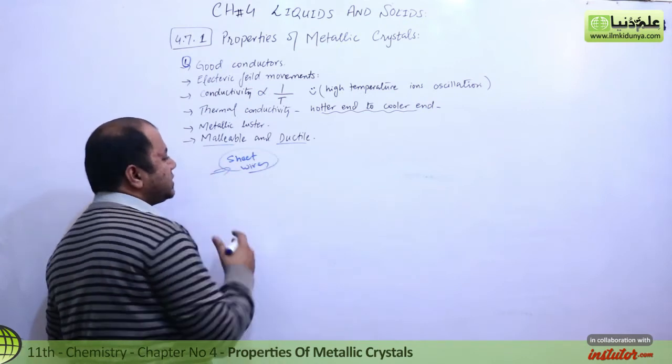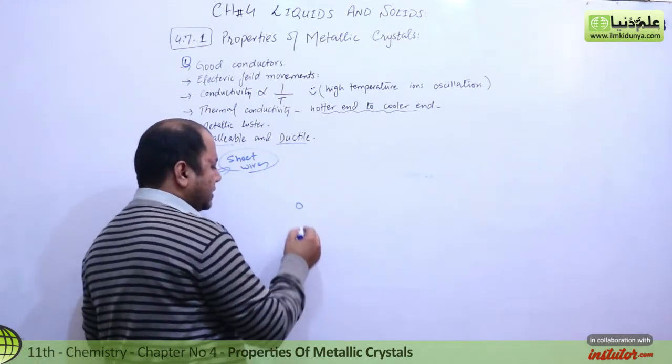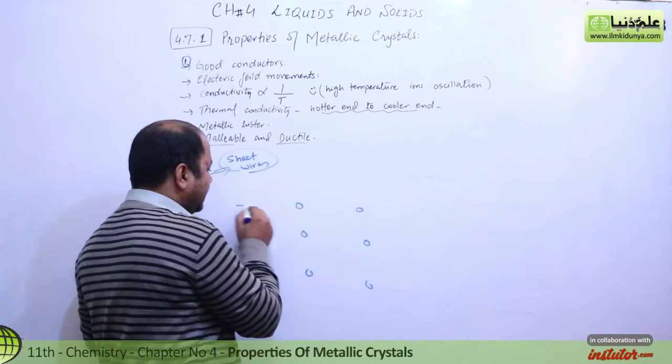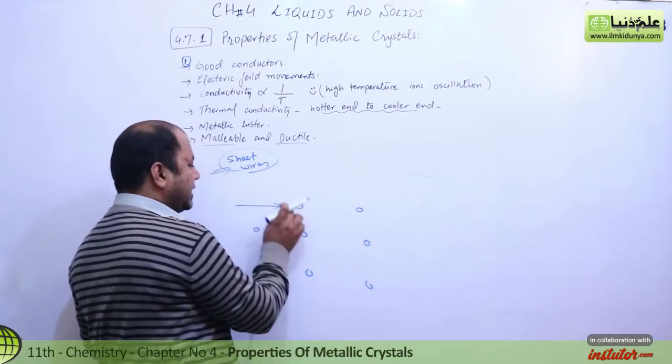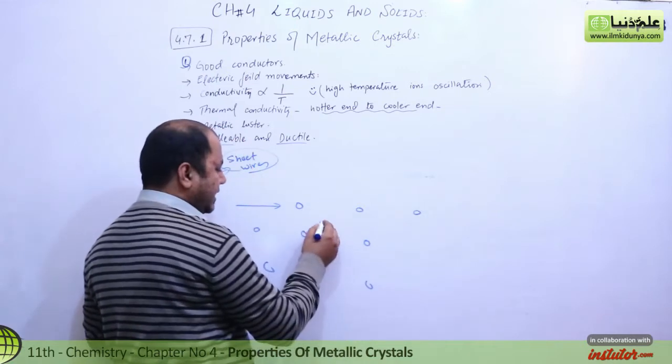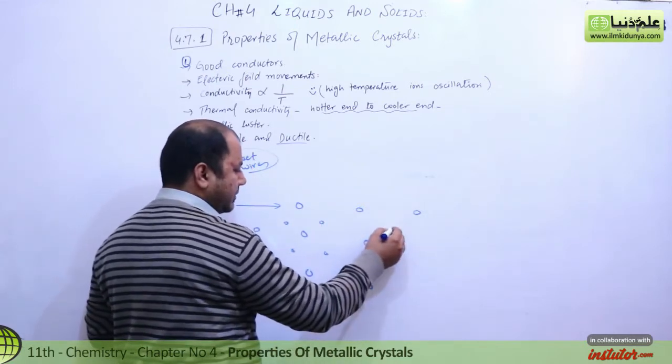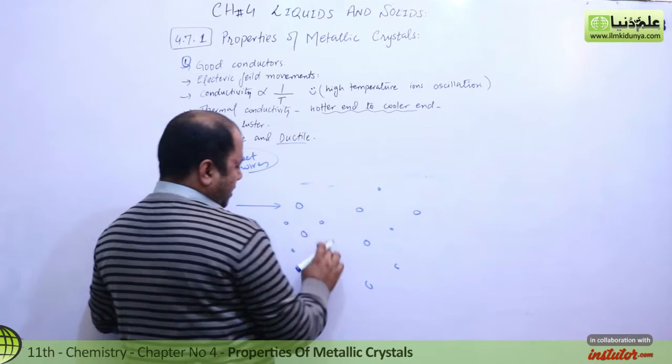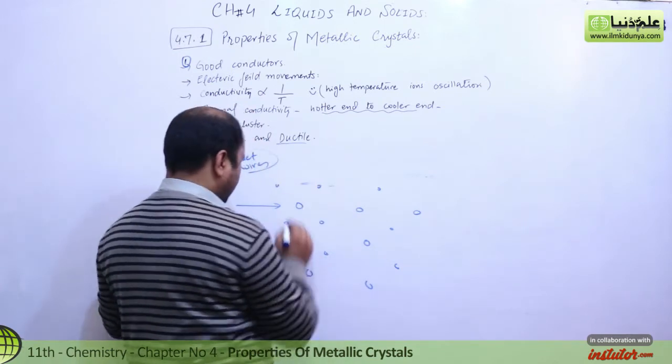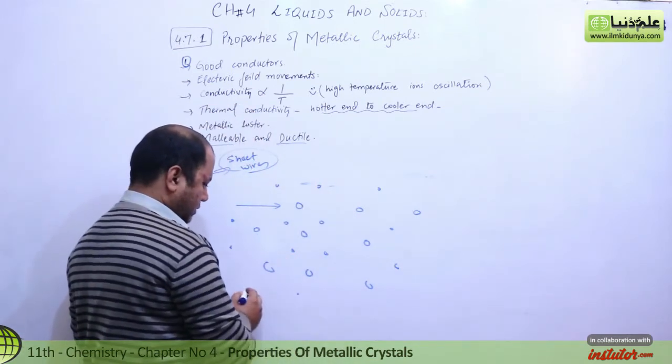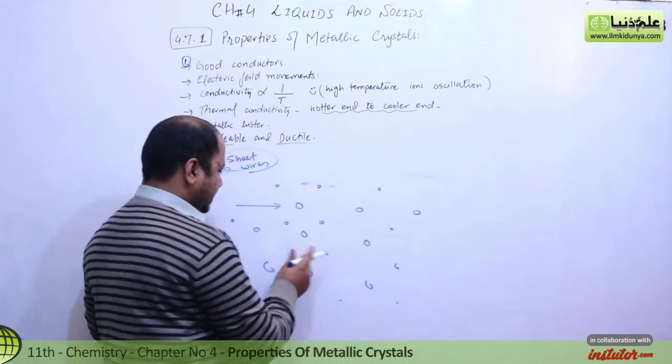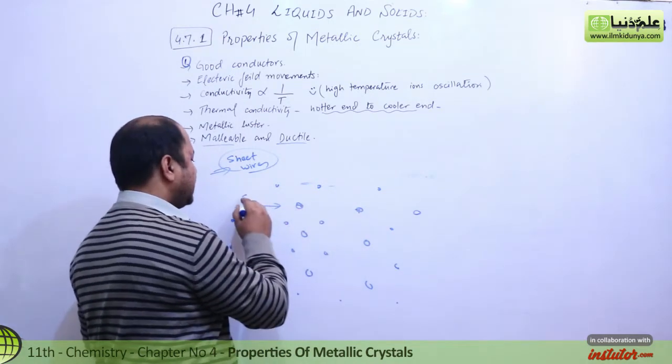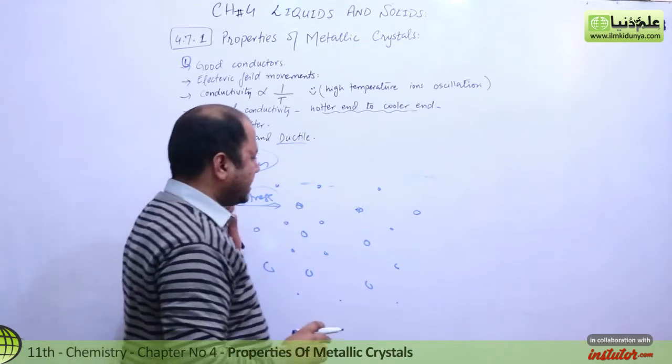In this phenomenon, we have positively charged ions. Let's say one ion has four electrons associated with it. When you apply stress here, the ions shift. This shifting is what allows for malleability and ductility.